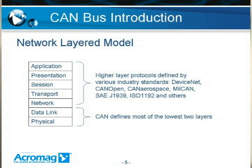This slide shows a model of a networked layer representation of CAN, or any network application. CAN defines the lower two levels: the data link layer and the physical layer. There are higher layer protocols built on top of CAN, including DeviceNet, CAN Open, CAN Aerospace, MILCAN, SAE J1939 as the automotive standard, and ISO 1192, which is used for heavy trucks to communicate between the truck and the trailer.